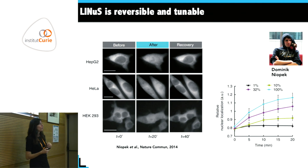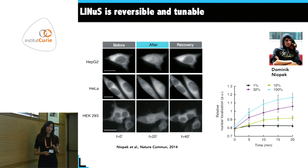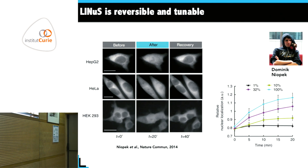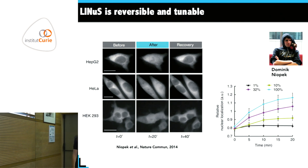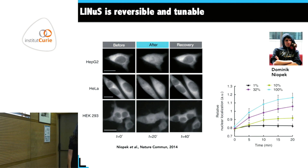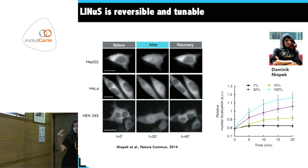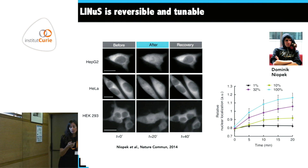Qualitatively, different cell lines always show the same behavior. Importantly, we can tune the system with light intensity — depending on intensity we can achieve different steady-state accumulations inside the nucleus, which is very important for applying this tool to our biological questions.